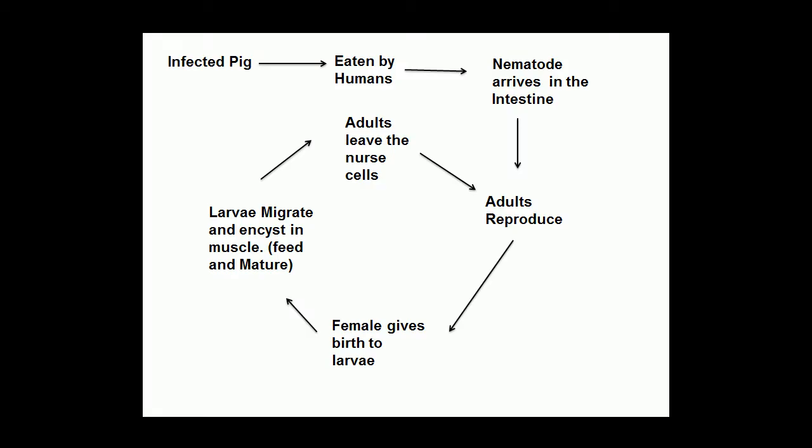Here's a diagram of the life cycle of the pork worm. An infected pig is eaten by humans, which allows the nematode to arrive in the intestines where the adults will reproduce. The female will give birth to live young — the larva — which will migrate and encyst in various muscle tissues. In the cysts, they will feed and mature. These cysts are called nurse cells, and after they've matured, the adults will leave the nurse cells and reproduce in the intestine.